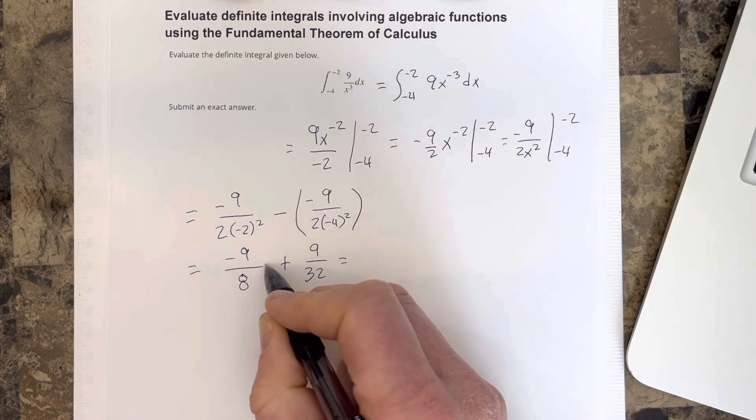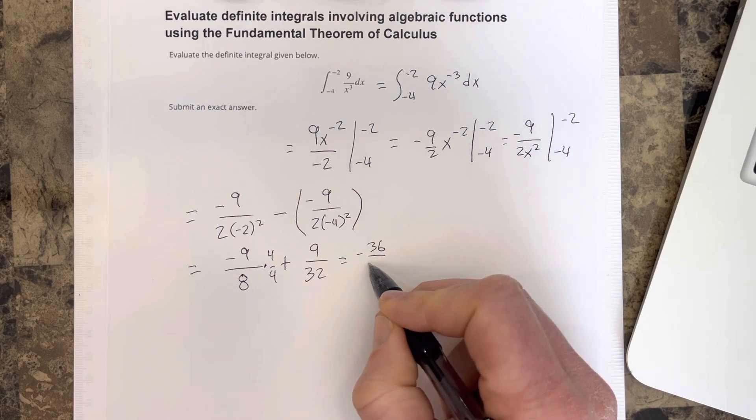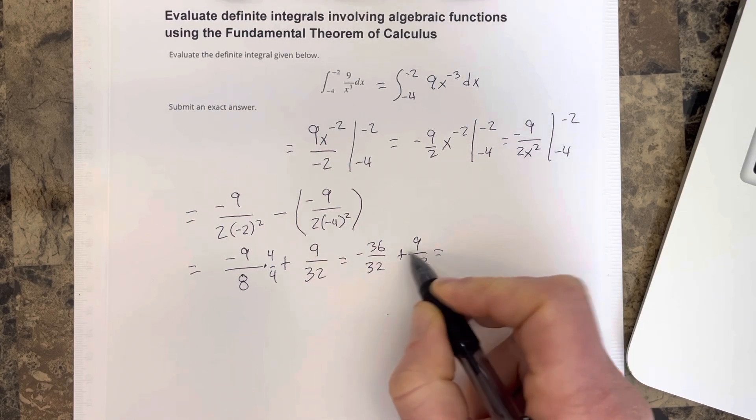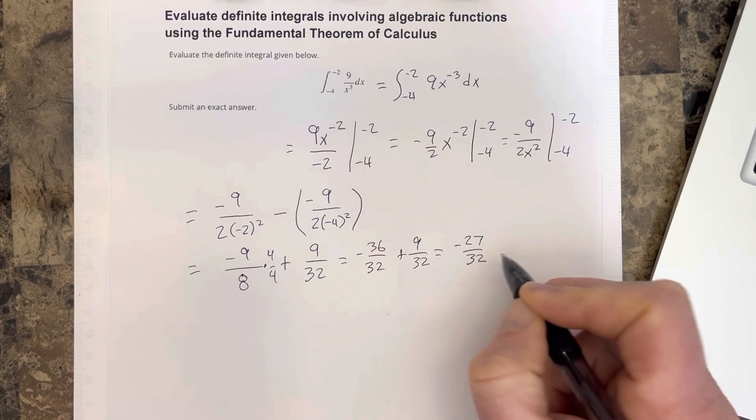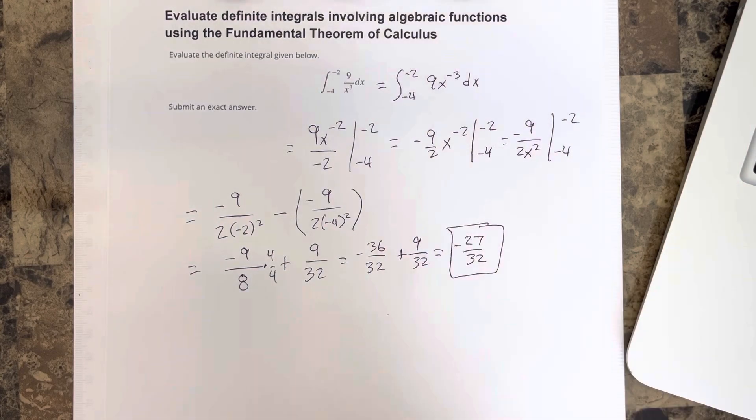If I multiply this fraction by 4 over 4, I get negative 36 over 32, plus 9 over 32. When I combine those together, I get negative 27 over 32. And that's the area for that integral.